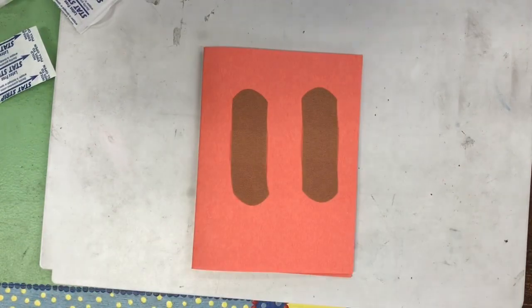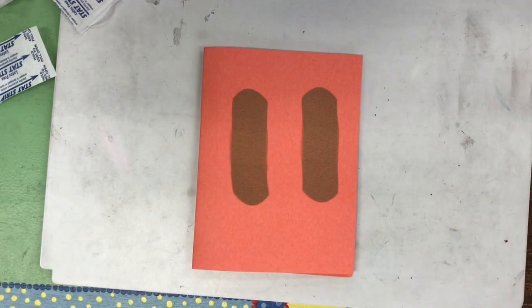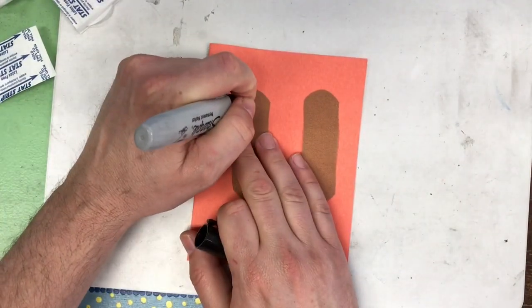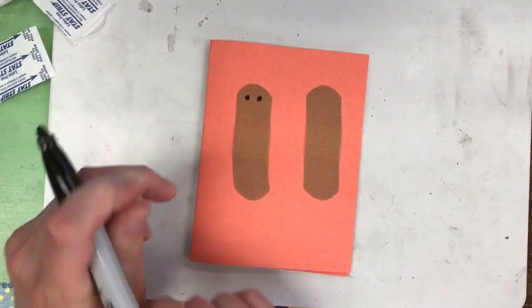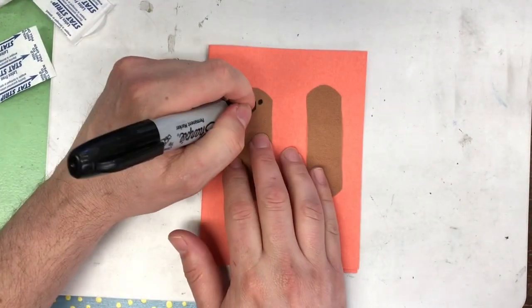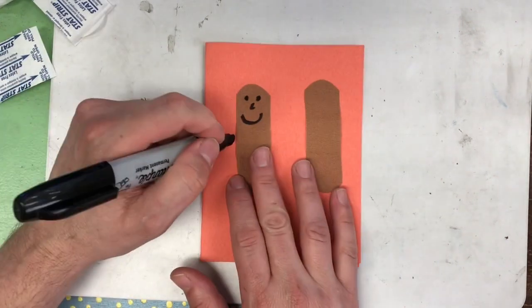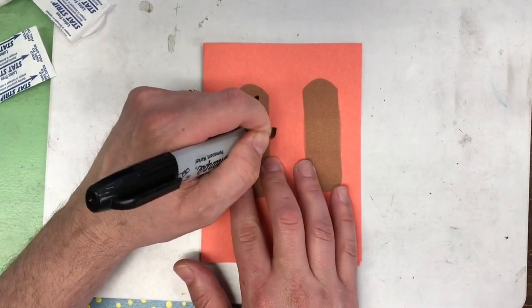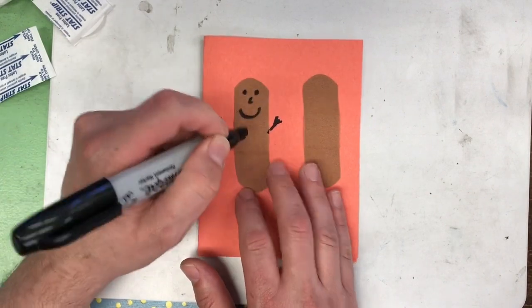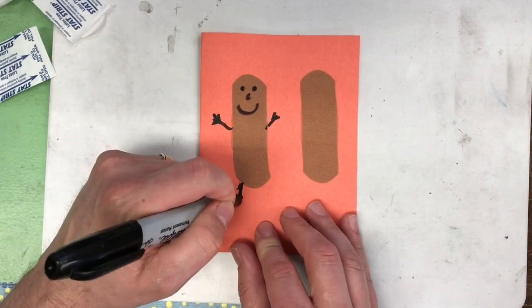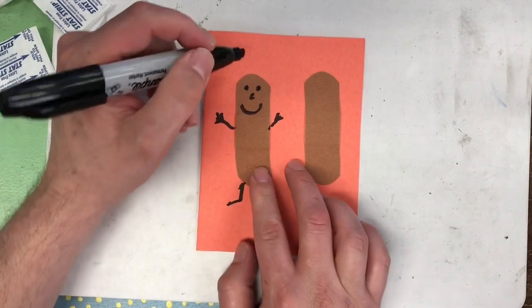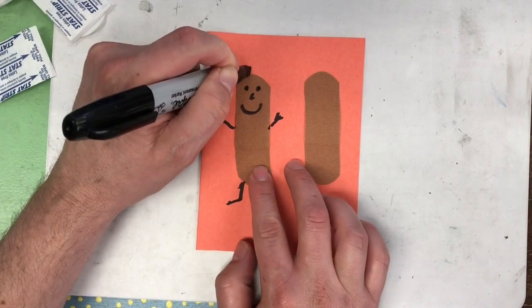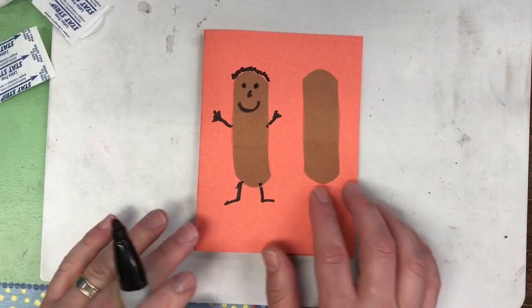What you're gonna do is turn your band-aids into little people. For example, you can do an eye, and you can do a little nose and smile. You can give them an arm, some fingers, there you go, and then you can give them little legs. If you want to give them a little bit of hair, you can give this one curly hair.